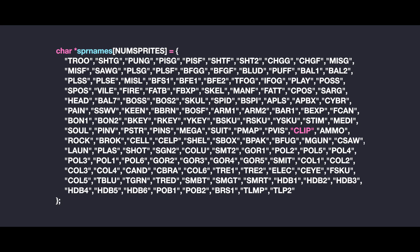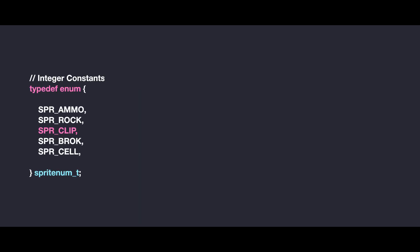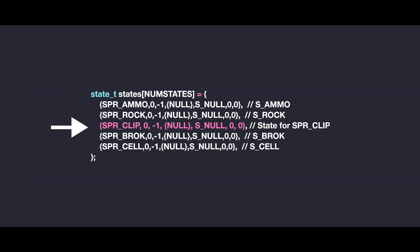It is done by using a character array to store the names of all sprites. We will use the clip sprite as it is the core of the animation. To identify specific sprites, an enum called 'sprite_enum' is defined where each sprite is assigned an index. In this case, 'spr_clip' is an integer that points to the clip entry in the sprite names array.